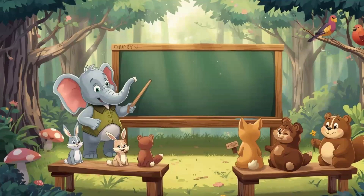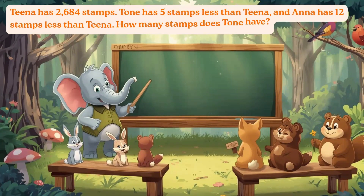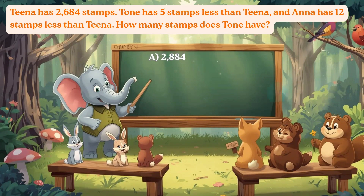Tina has 2,684 stamps. Tone has 5 stamps less than Tina, and Anna has 12 stamps less than Tina. How many stamps does Tone have? Option A: 2,884. B: 1,000. C: 2,679. D: 3,169.